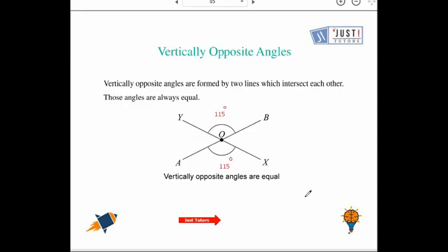If we talk about angle YOX, we can say that the angle is 65 degrees, and the vertically opposite angle is also 65 degrees.